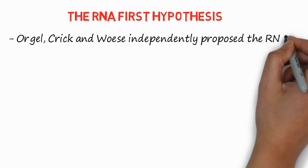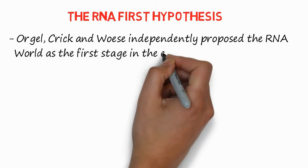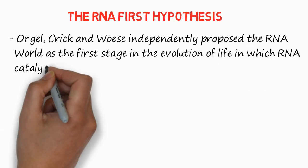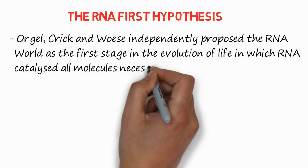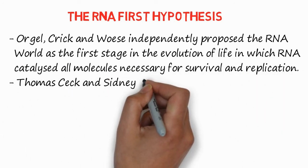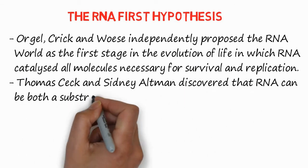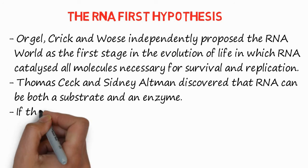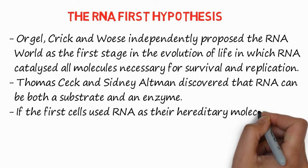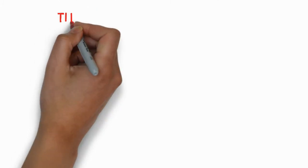Now, which biomolecule came first? The RNA first hypothesis, proposed independently by Orgel, Crick, and Woese, states that RNA was the first stage in the evolution of life, in which RNA catalyzed all molecules necessary for survival and replication. Then Thomas Cech and Sidney Altman discovered that RNA can be both a substrate and an enzyme. If the first cells used RNA as their catalytic molecule, DNA evolved from an RNA template.